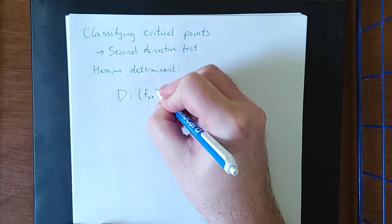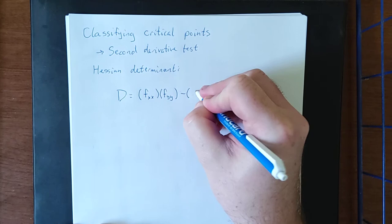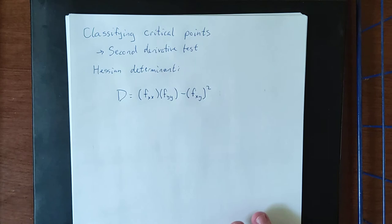We take the second derivative of f with respect to x, multiply it by the second derivative of f with respect to y, and then subtract the mixed partial derivative squared.